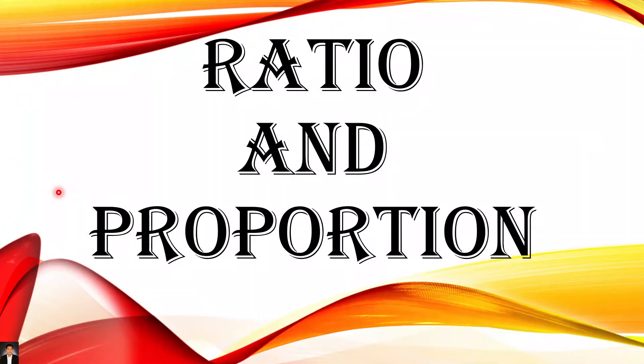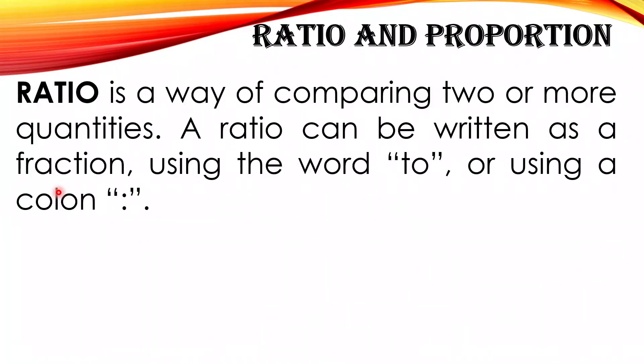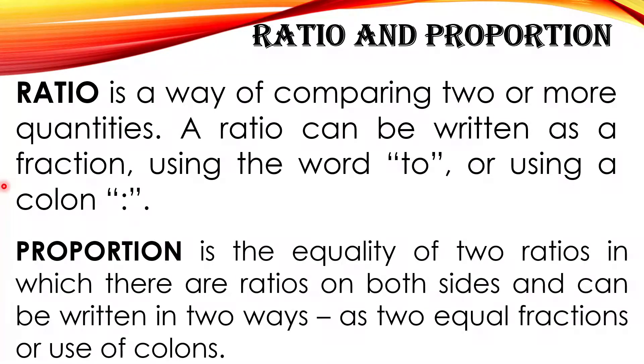For now, we're going to define what is a ratio. A ratio is a way of comparing two or more quantities. A ratio can be written as a fraction, using the word 'to', or using a colon. The definition for proportion is equality of two ratios in which there are ratios on both sides, and can be written in two ways as equal fractions or use of colons.